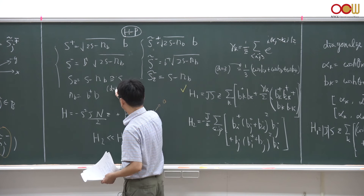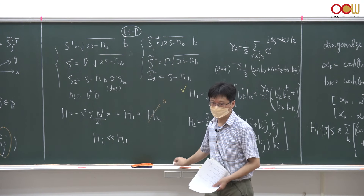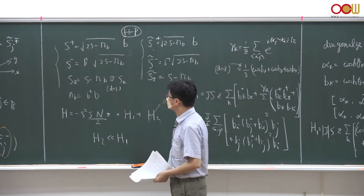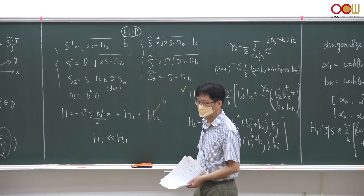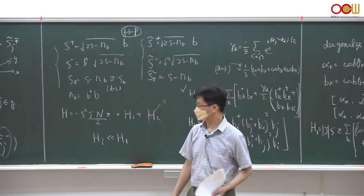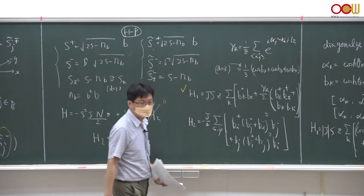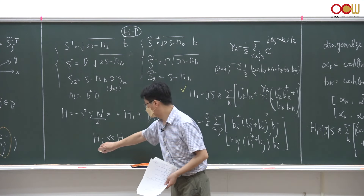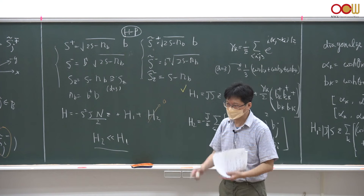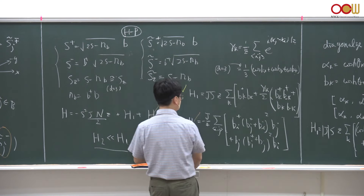For low-dimensional antiferromagnets, spin flips become dominant and the corrections exceed the spin size, destroying long-range spin order. But for now we simply neglect H2, treating it as subleading compared to H1, since spin flip events are rare at low temperatures. We keep only H1.